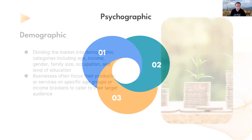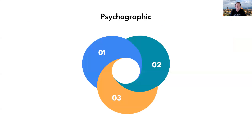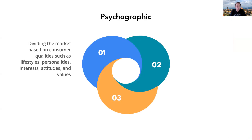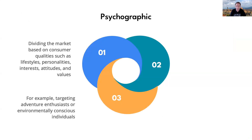Next is psychographic segmentation — dividing the market based on consumer qualities such as lifestyles, personalities, interests, attitudes, and values. For example, targeting adventure enthusiasts or environmentally conscious individuals. Companies focus their efforts on appealing to specific consumer groups with similar qualities.